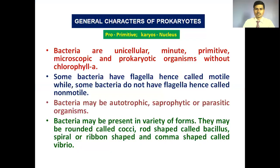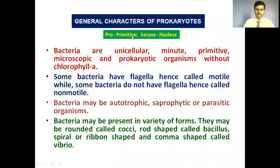First we will see the general characters and later the detailed ultrastructure of the bacterial cell. As far as general characters are concerned, bacterial cells are unicellular, made up of a single cell. These are primitive — not well developed — and are microscopic. For observation of bacterial cells, we require an electron microscope.